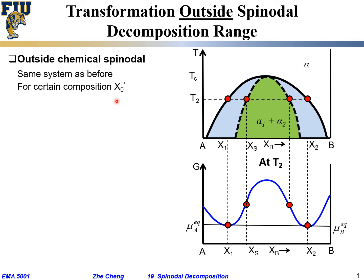Now we are looking at another composition, x₀'. I put x₀' in the blue region — within the miscibility gap but outside the chemical spinodal. That means within the solid line but outside the dashed line. That's where x₀' is.